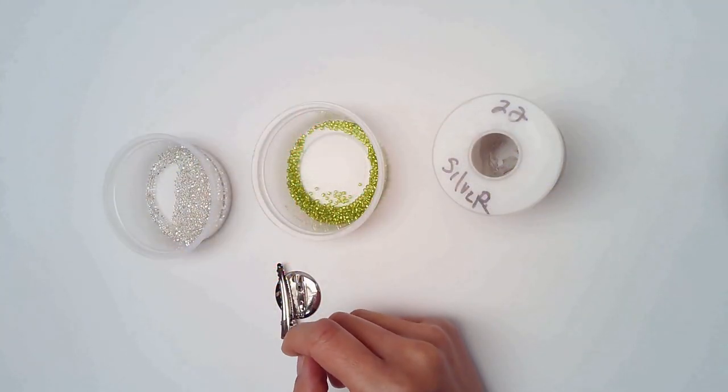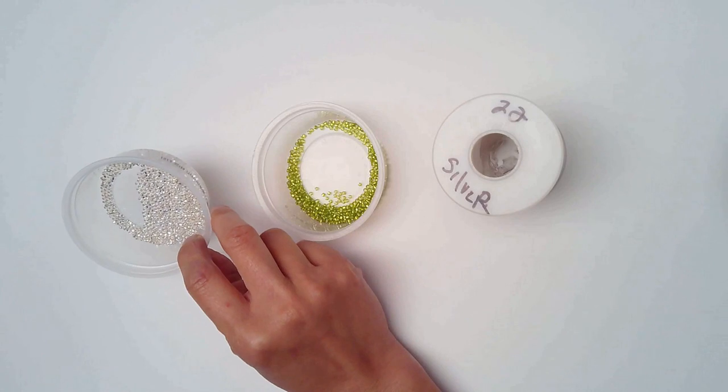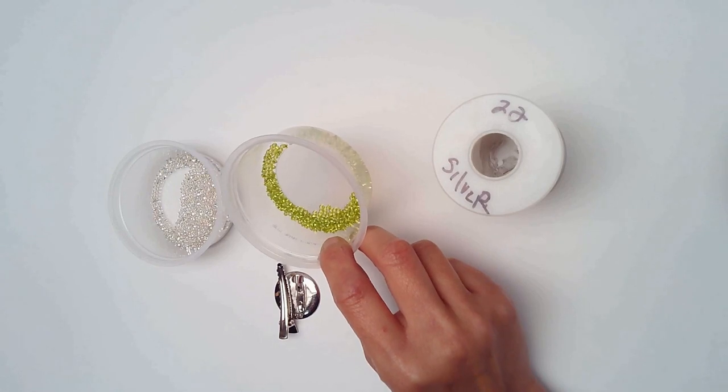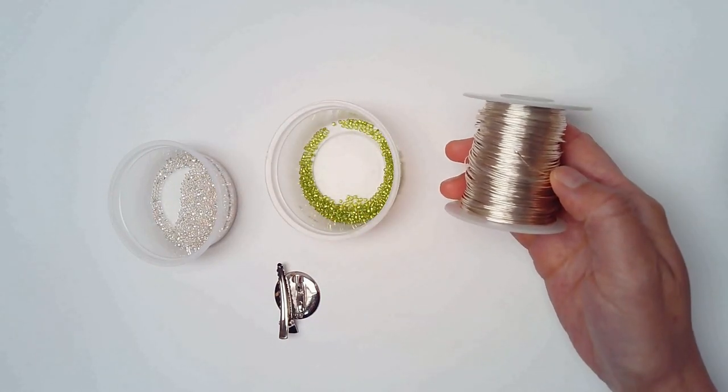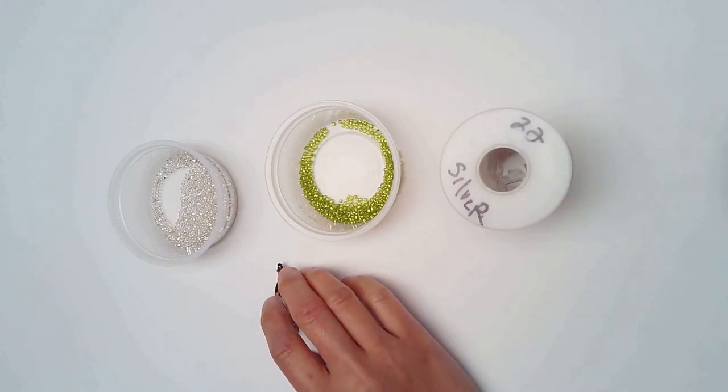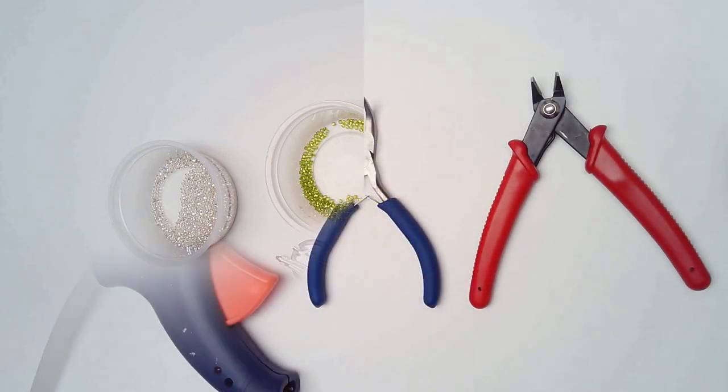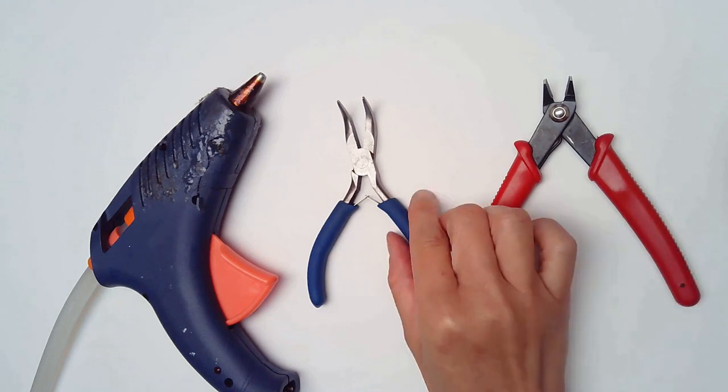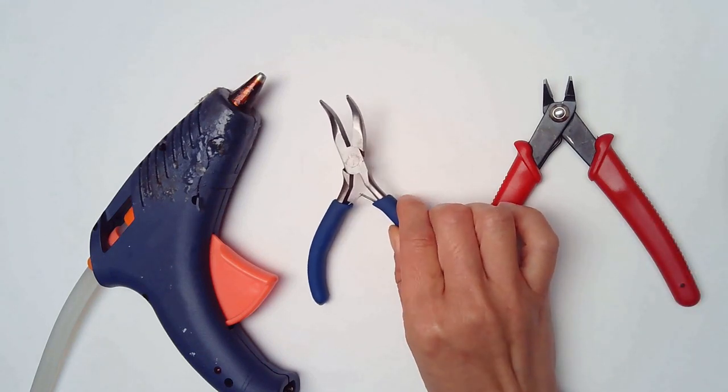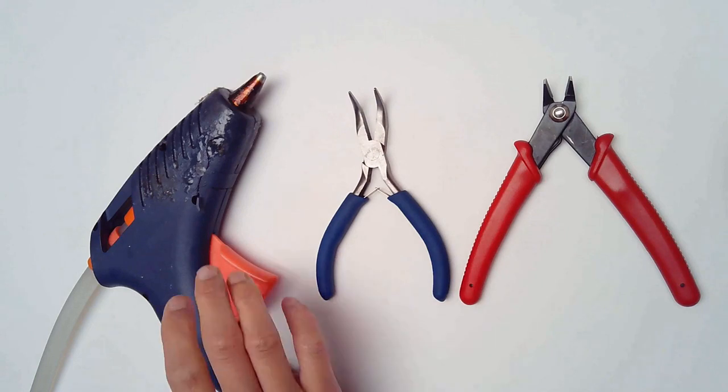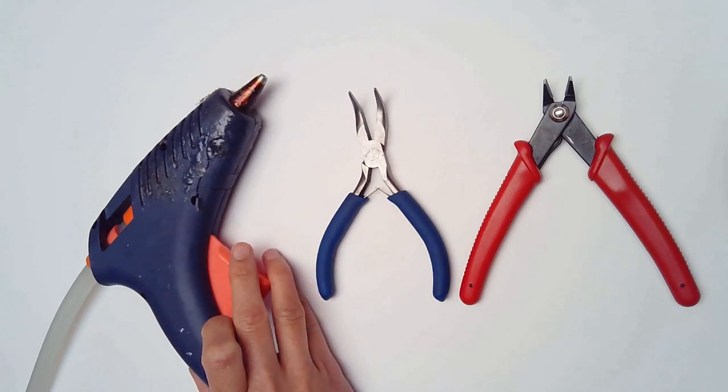You can download the PDF and also purchase the kit at my website at BeadFlora.com. For today's project we will be using size 11 seed beads in silver lined rainbow silver and silver lined lime green, 22 gauge copper core wire in silver and also a hair clip finding. For tools we will need wire cutters, chain nose or needle nose pliers, and hot glue.